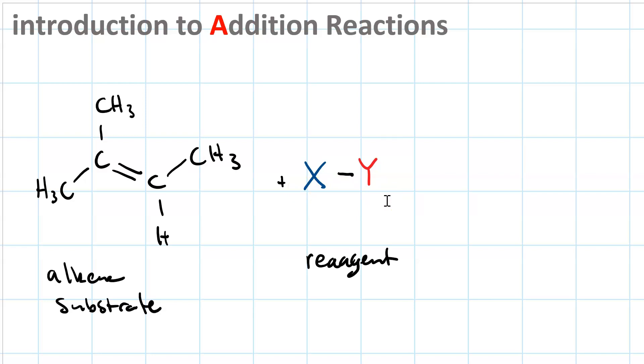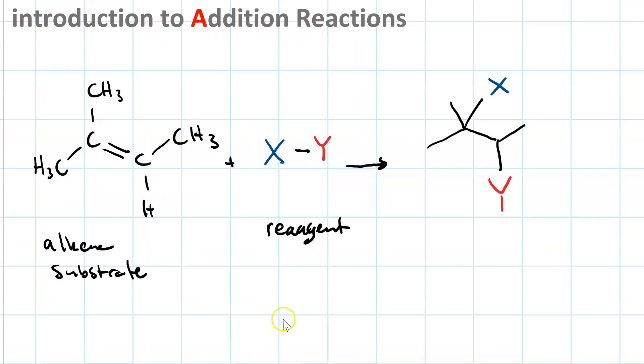This provides a variety of stereochemical and regiochemical outcomes. So here's one regiochemical outcome, where the x component of the reagent added to the more substituted carbon of the alkene, and the y component added to the less substituted part. We could also have the opposite regiochemical result, where the y ends up in the more substituted position and the x ends up in the less substituted.